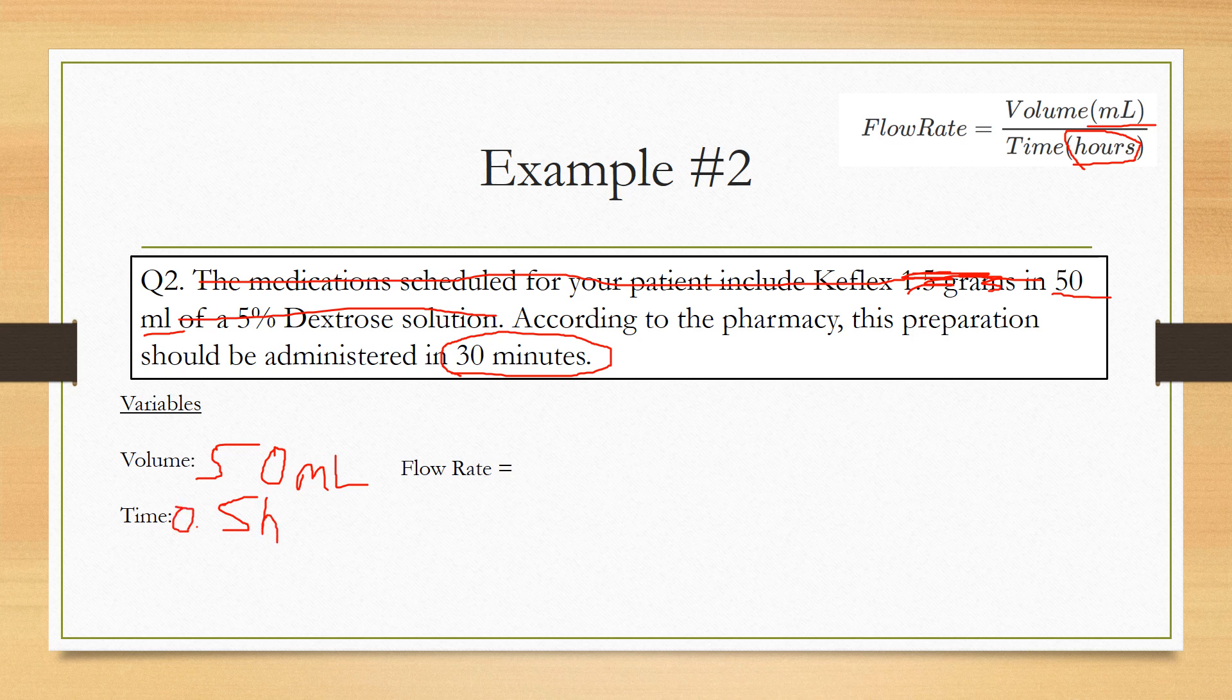Now we go to our formula. So we have 50 milliliters divided by 0.5 hours. It's 0.5 because it's half an hour, and it always has to be in hours for this formula to work. If you divide 50 divided by 0.5, that's going to equal 100 milliliters per hour.